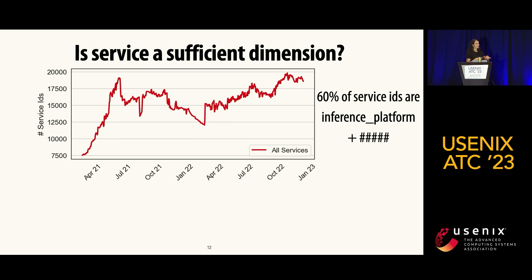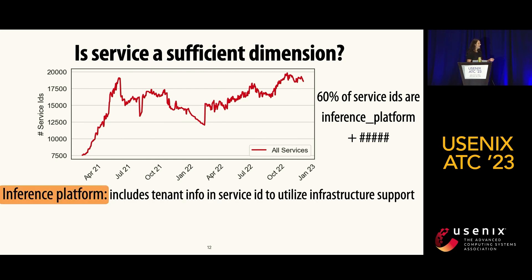When we investigated why we saw this much fluctuation, we found that most of the service IDs were of the form 'inference platform' plus some random number. We had some conversations with developers and learned that the inference platform appends pertinent information onto each model, so each independently trained model has a random number associated with it.